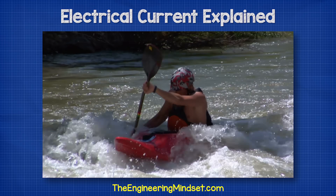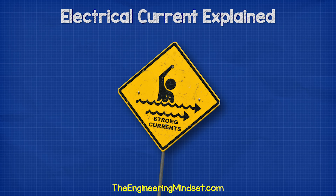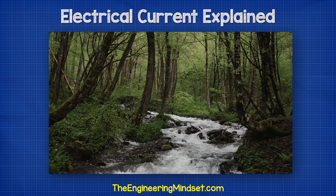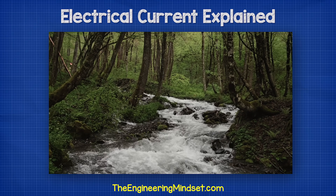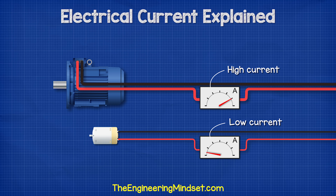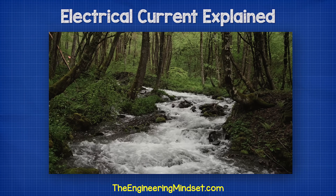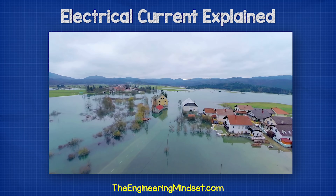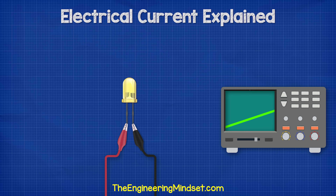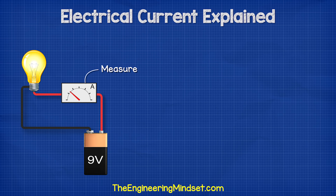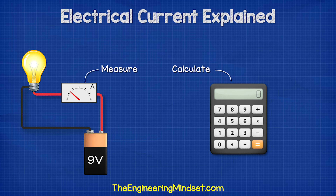People often refer to a river or the tide of the sea as having a strong current — it's very similar to electricity. A river with a lot of fast flowing water is said to have a strong current, and the same with electricity: a cable with a lot of electrons flowing also has a high current. A river is able to handle a certain amount of water flowing through it, but if more water enters than it can handle, then the river will burst its banks. The same with electricity — the cable will burst and burn out. Therefore, manufacturers need to be able to test cables and lamps to find out how much current they can handle. We also want to be able to see how much current is flowing through our circuits, as well as being able to calculate this.